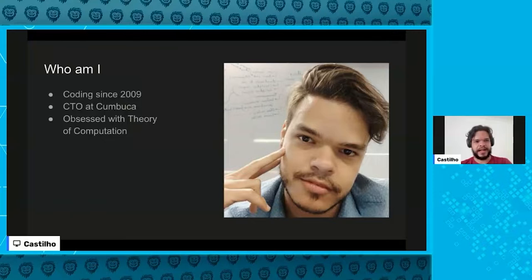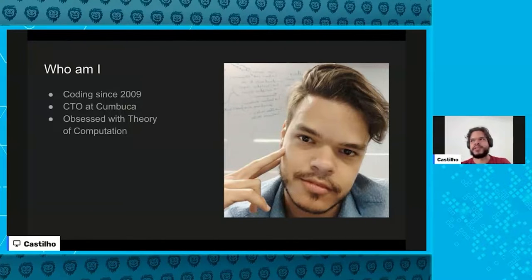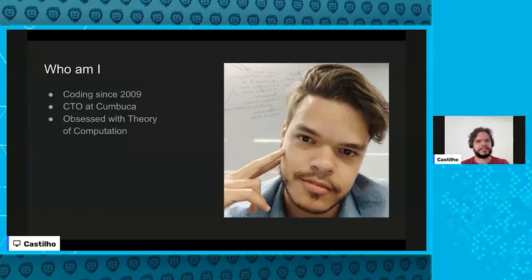My name is Pedro Castillo. I've been coding since 2009 — about 13 years now. I'm currently the CTO at Convuca, a fintech doing joint accounts so you can control your finances together with family or friends, or anyone you split expenses with. But I'm really obsessed with the theory of computation, and that's what led me into the rabbit hole I'm going to talk about.